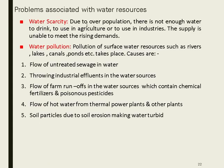Water scarcity is due to overpopulation — there is not enough water to drink. Water pollution involves pollution of surface water resources such as rivers, lakes, and canals. Causes include flow of untreated sewage, discharge of industrial effluents, flow of warm runoff, hot water discharge from thermal power plants, and soil particles from erosion making water turbid.